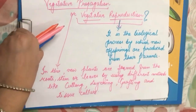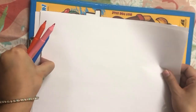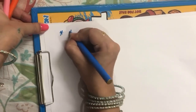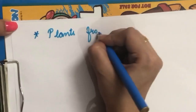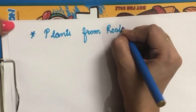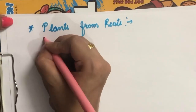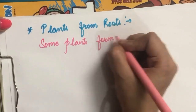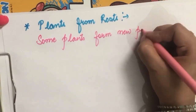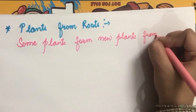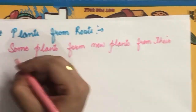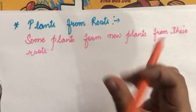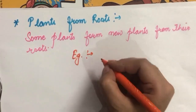Now let's start with Plants from Roots. Some plants form new plants from their roots, as these plants store food in their roots and that is why they can grow into new plants. These examples are important from the examination point of view — I can ask you to name a plant that can grow from roots.